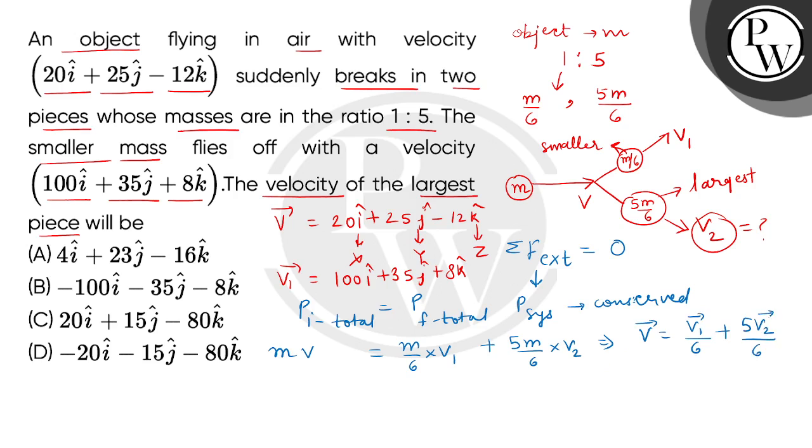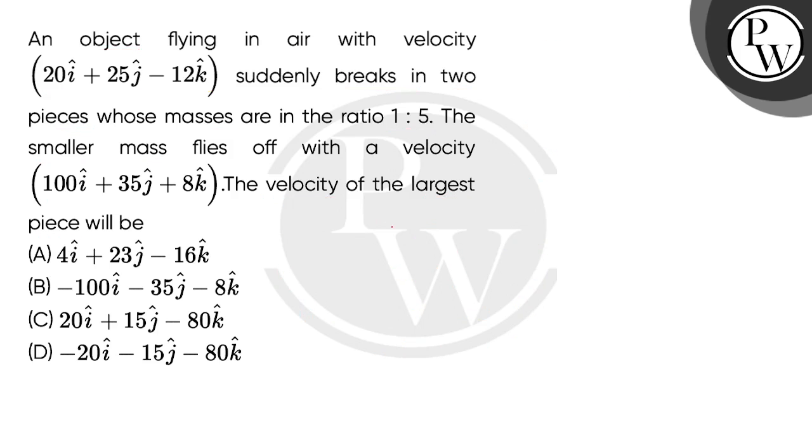v is equal to v vector given in vector form. We have to find v2's value. We will find v2's value equals to v vector minus v1's value divided by 6, and then it is cross multiplied by 6 by 5. When we put values here, this is 6 divided by 5. v vector is the value of 20i cap plus 25j cap minus 12k cap, and minus 1 by 6, where v1 vector is the value of 100i cap plus 35j cap plus 8k cap. After solving v2, we will get the final answer of 4i cap plus 23j cap minus 16k cap.